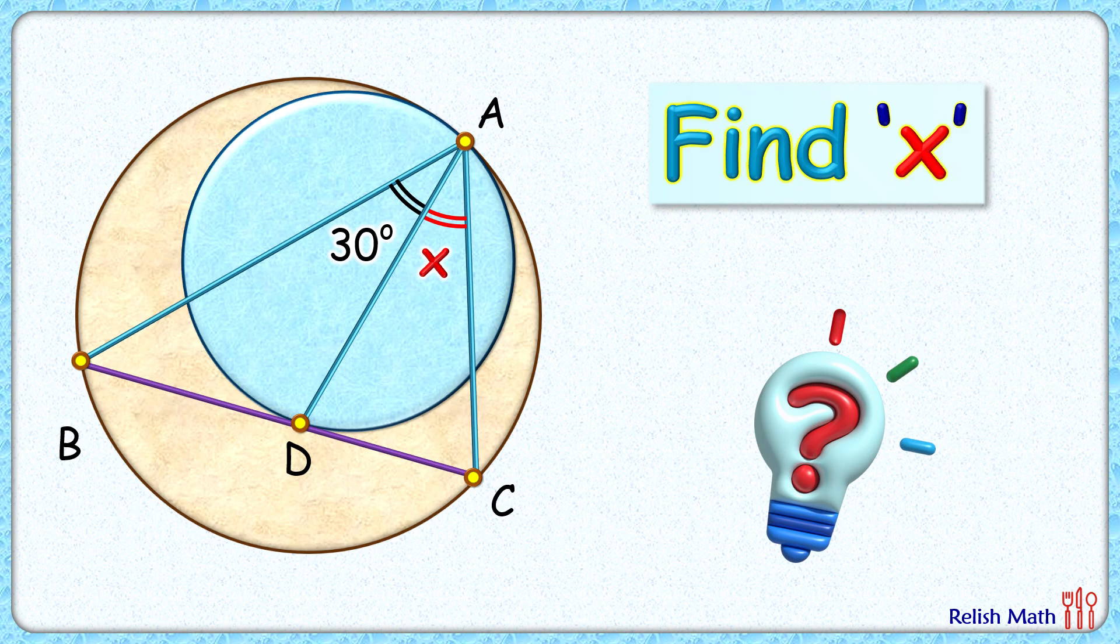This really interesting question. Given are two circles touching each other at point A. BC is tangent to the blue circle touching it at point D. Angle BAD is given as 30 degrees.